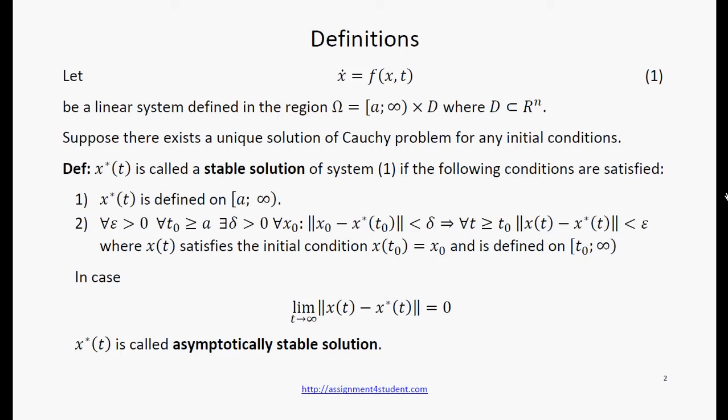Let 1 be a linear system defined in the region omega. Suppose there exists a unique solution of Cauchy problem for any initial conditions. X star of t is called a stable solution of system 1 if the following conditions are satisfied.